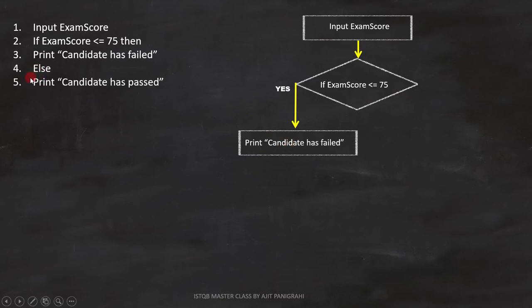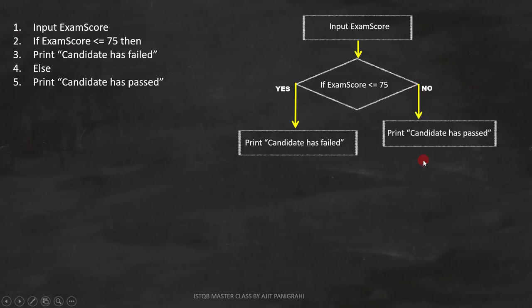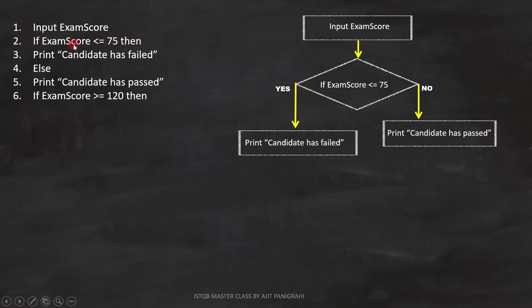Lines 4 and 5 are 'else print candidate has passed.' These two lines execute if the condition on line 2 fails. Since line 5 is a statement, we can represent it on the flowchart. Now analyzing line 6: 'if exam score greater than or equal to 120.' It is a condition, but we need to determine where to place it. Since the condition on line 2 is not yet ended, we must place this condition inside the else branch.